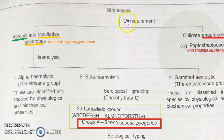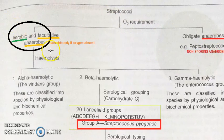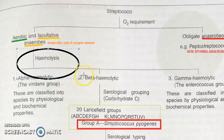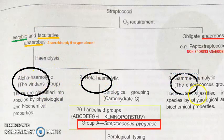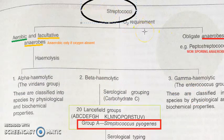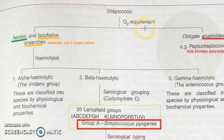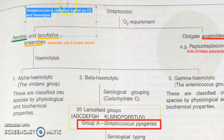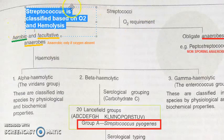Streptococcus is classified based on oxygen requirement as aerobic and anaerobic, with facultative anaerobes also present. The second basis of classification is hemolysis — alpha, beta, and gamma. It's important to keep reminding yourself we're talking about streptococcus, because in microbiology all the bacteria can get confused. So remember: streptococcus is classified based on oxygen and hemolysis.